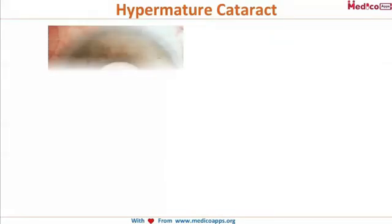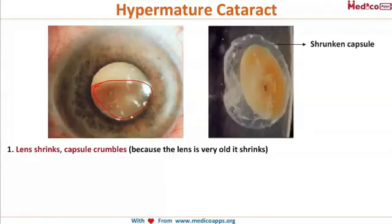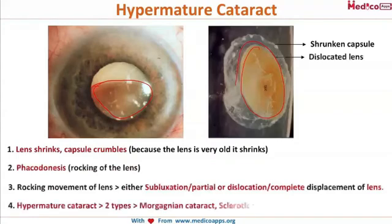Hypermature cataract proceeds from the mature type. The lens shrinks, and the capsule crumbles because the lens is very old. There is phacodonesis — that is, rocking movement of the lens — because it is floating in the liquefied cortex surrounding it. Phacodonesis means a rocking or moving movement of the lens when the eyes are moved. There can be either subluxation, which is partial dislocation, or complete dislocation of the lens within the shrunken capsule.